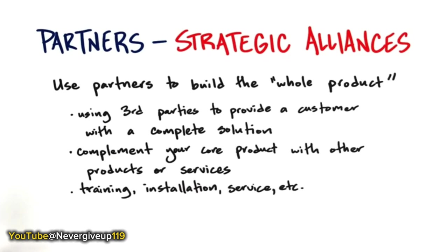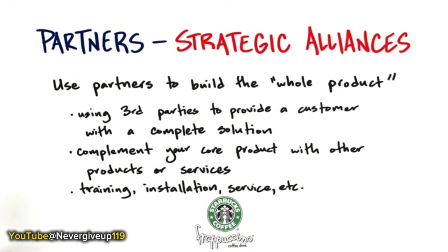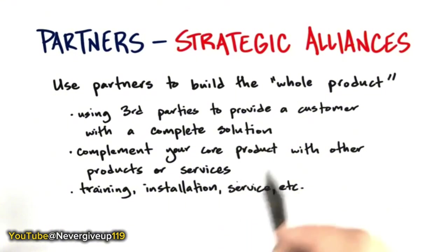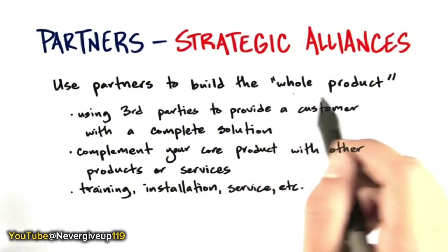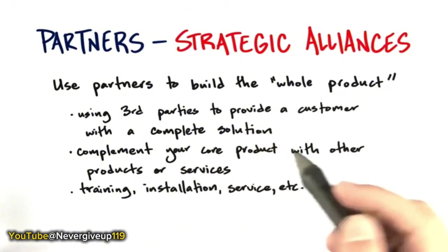It could be training, installation, or service — to surround your product with a cloud of other resources to address mainstream customers. For example, in 1996, Starbucks partnered with Pepsi to bottle, distribute, and sell Frappuccino, giving them access to Pepsi's enormous distribution channel. One word of caution: the phrase I used was 'to develop the whole product to deliver a complete solution to mainstream customers.'